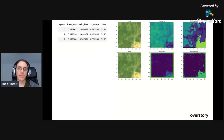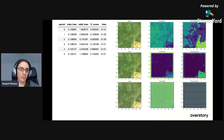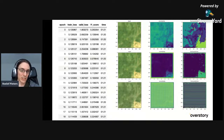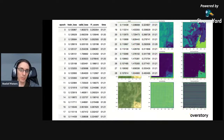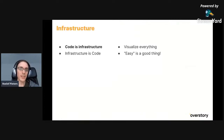With segmentation models, things can break down during training. Something really bad might be happening with predictions visually, even if the F1 score climbs back up. If you don't check visually and just keep training, you might go all the way to 40 percent F1 after 28 epochs, having wasted all that time, when the predictions have completely deteriorated. If you include the visual part as part of the data science pipeline, things would have been much easier to catch early.